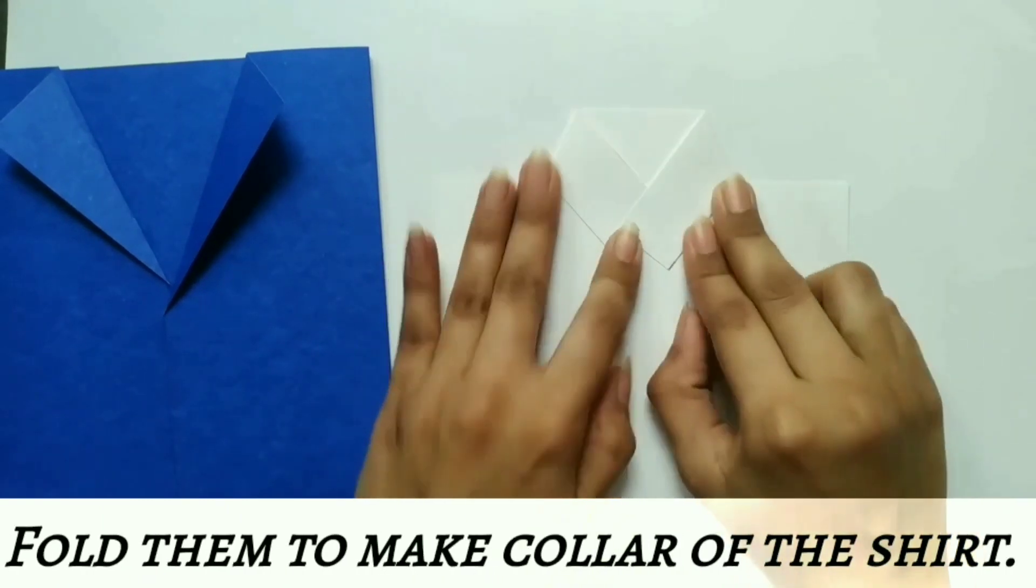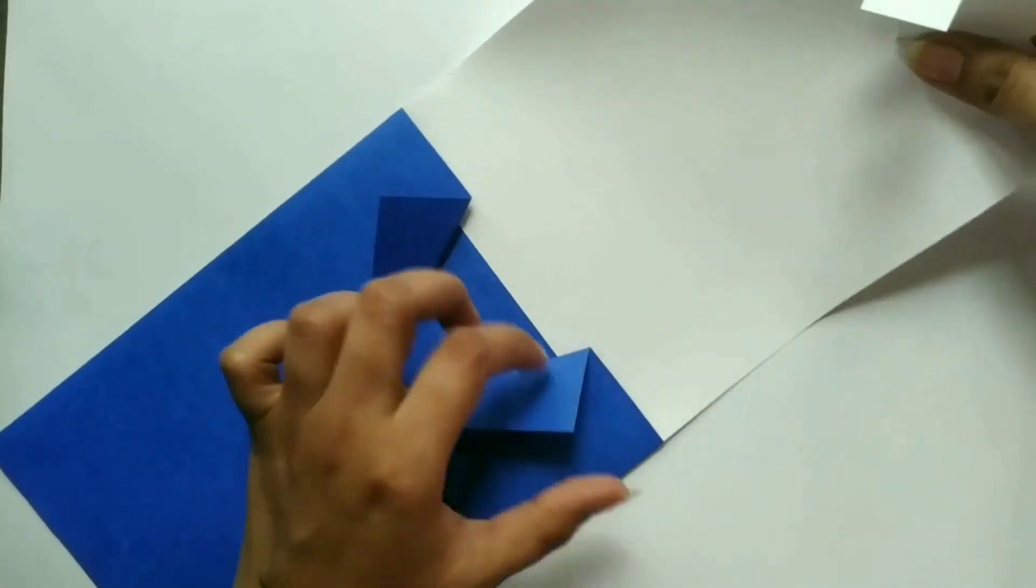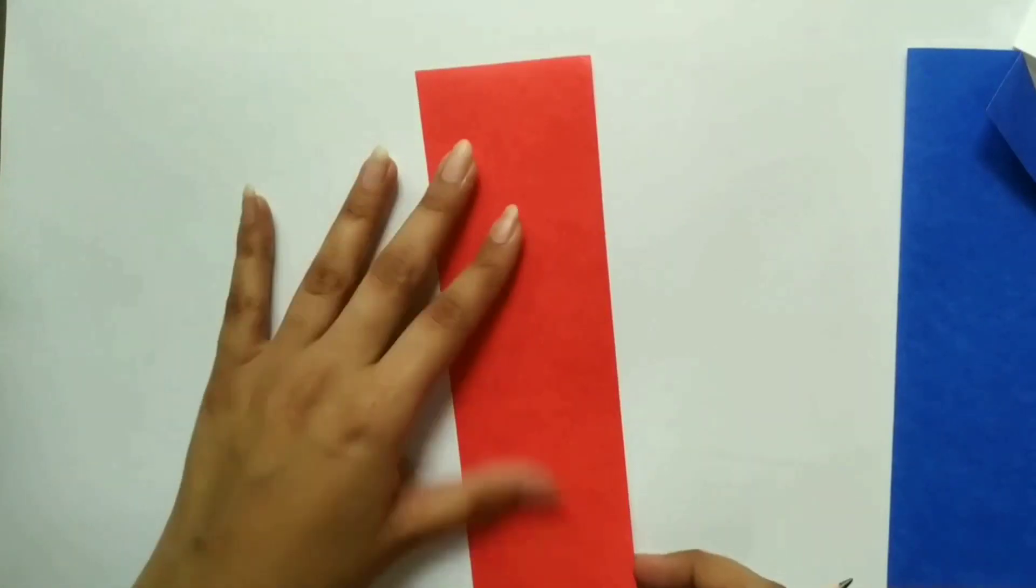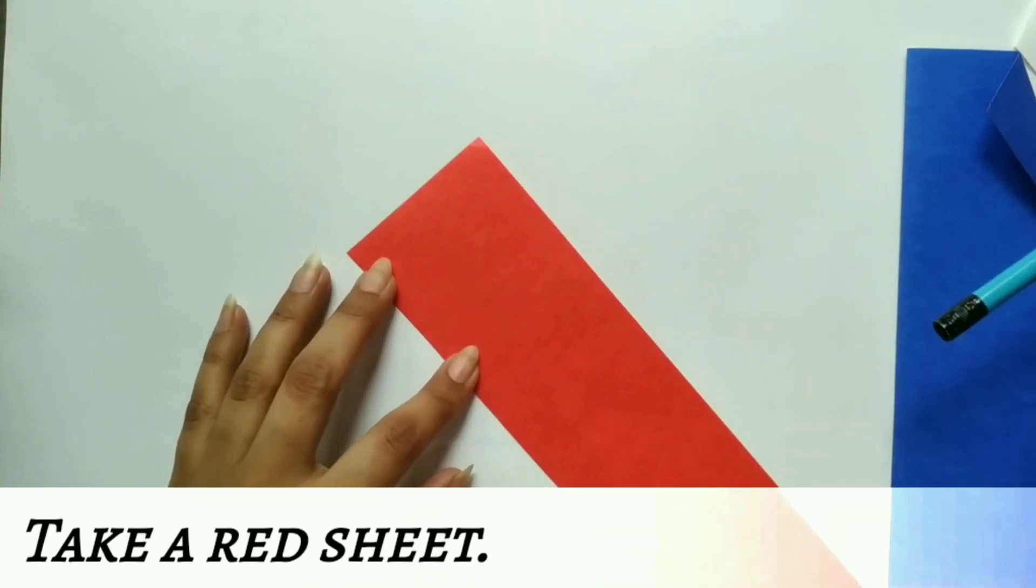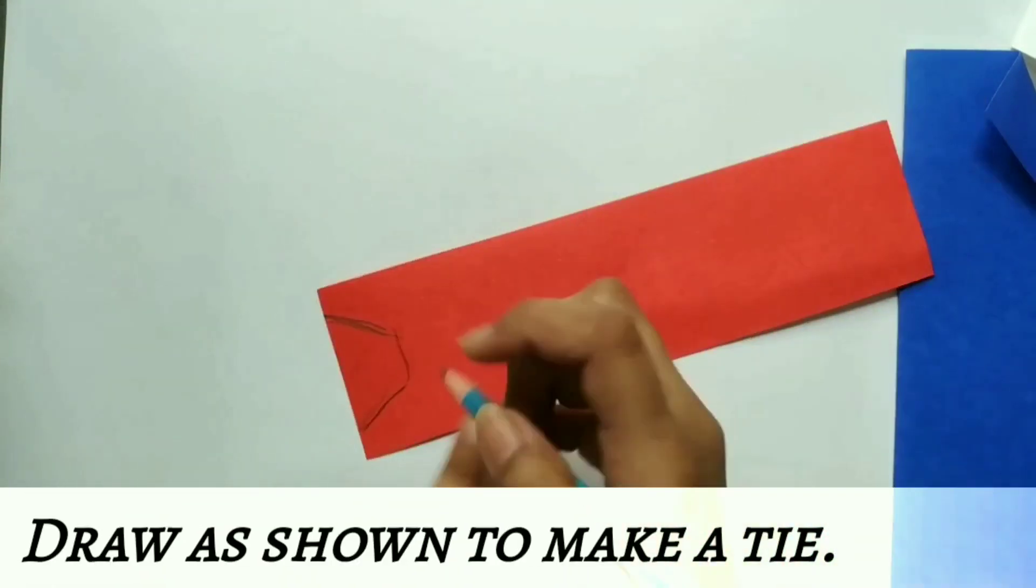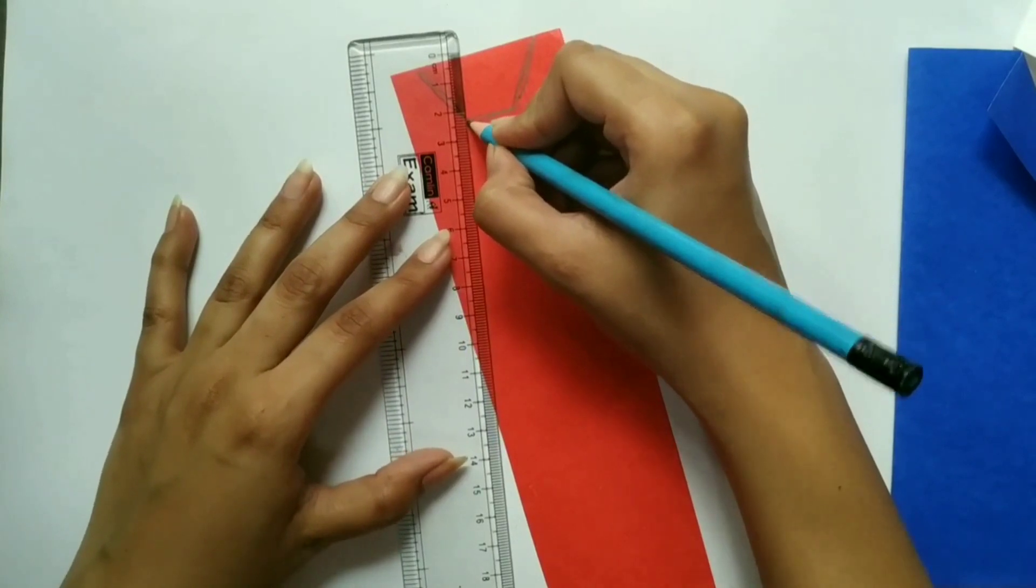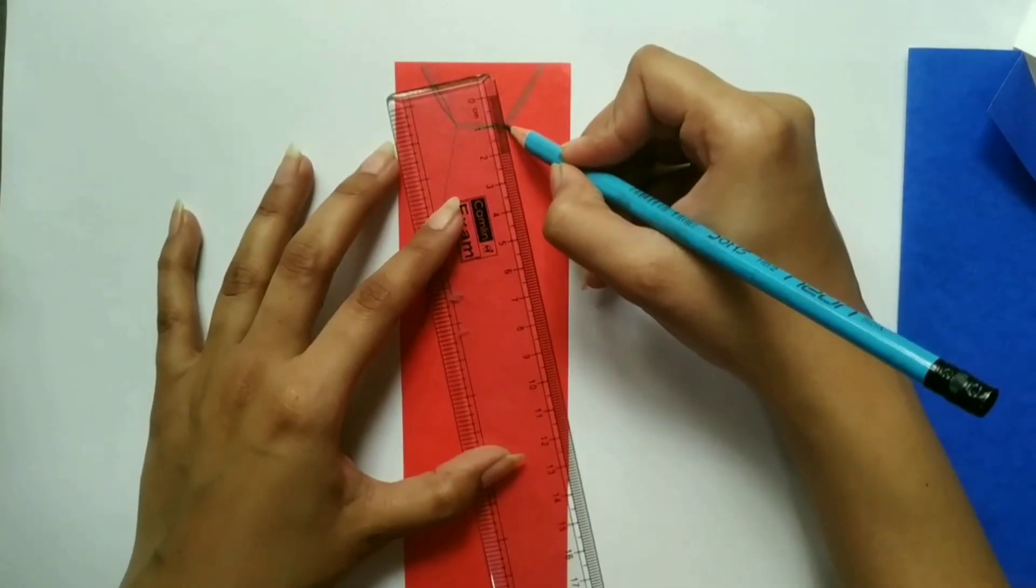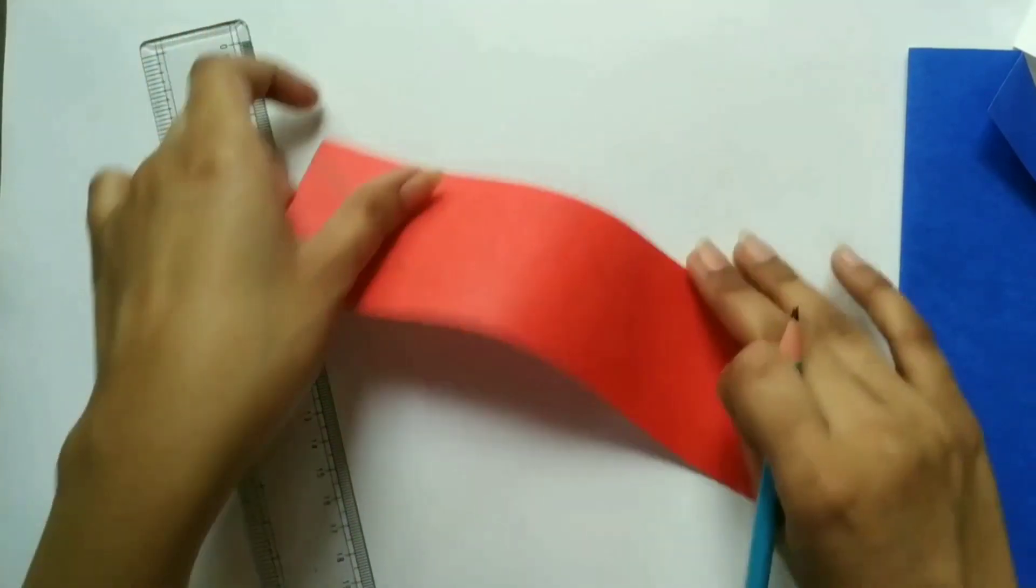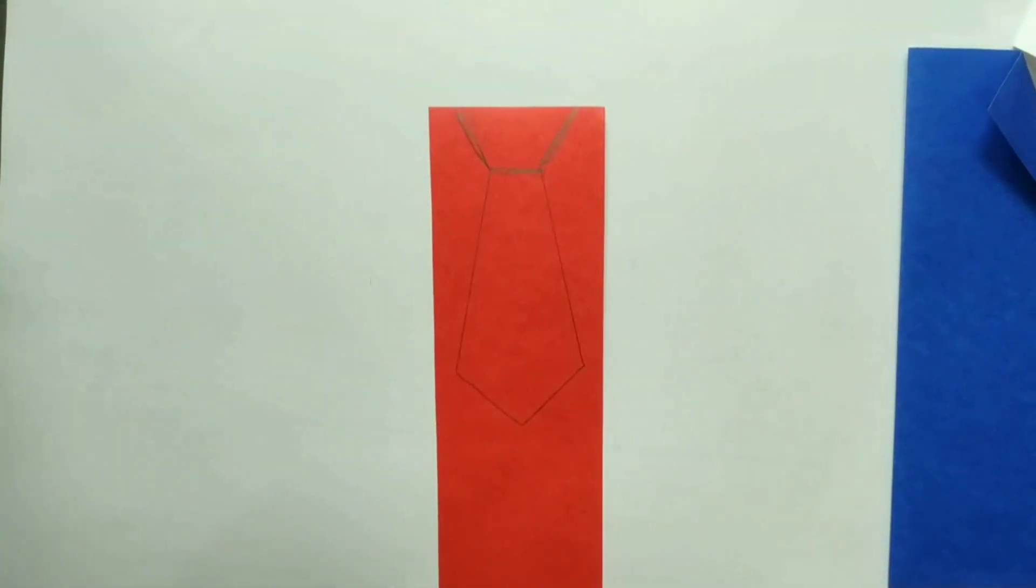Now, fold the strip to make the collar. Take a red sheet to make the tie. Draw as shown.